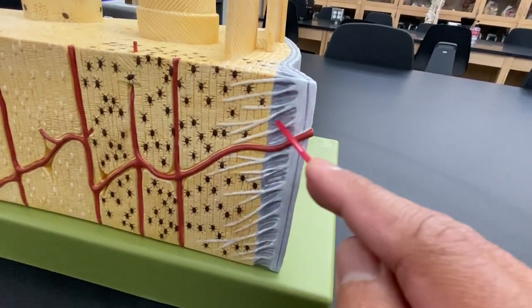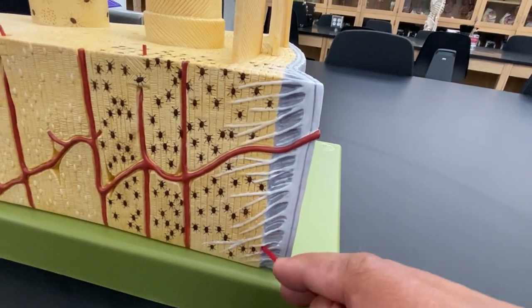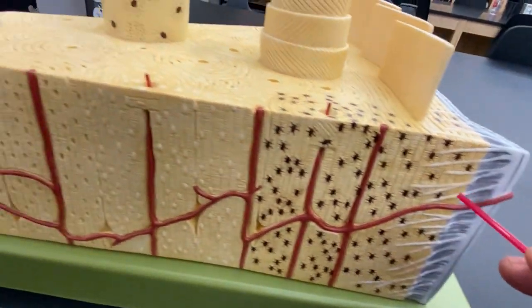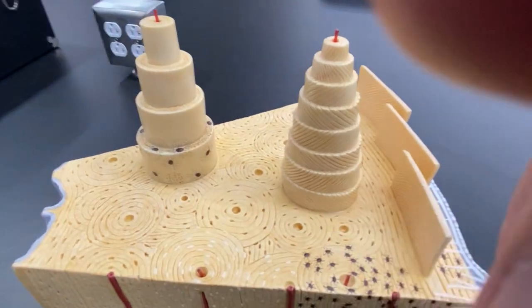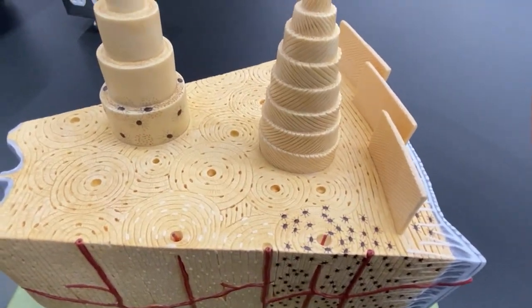These are little Sharpey's fibers that kind of extend right through here. And that is the compact bone model in a nutshell. Hopefully that helps.